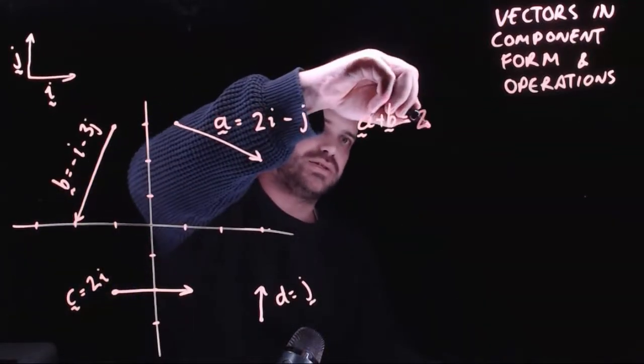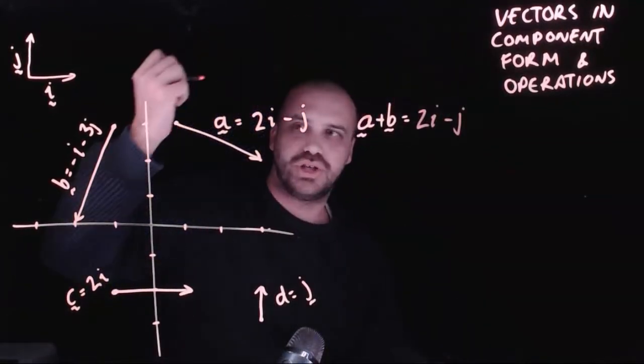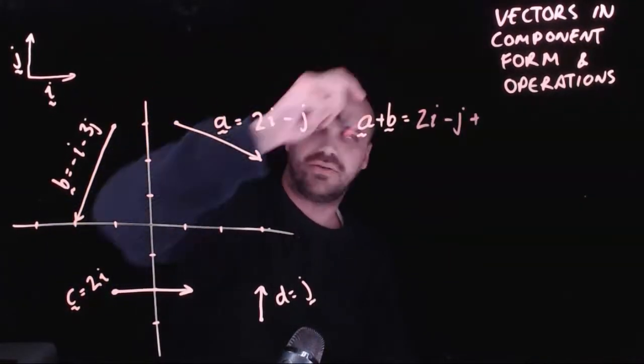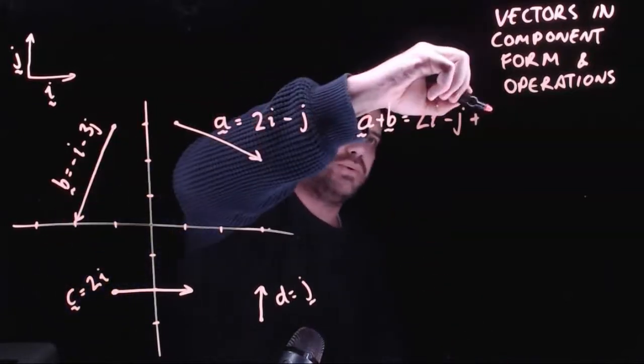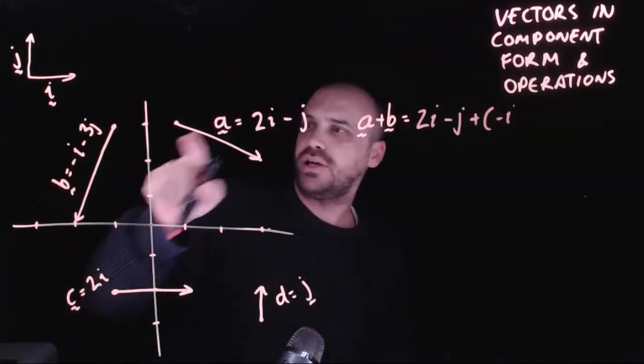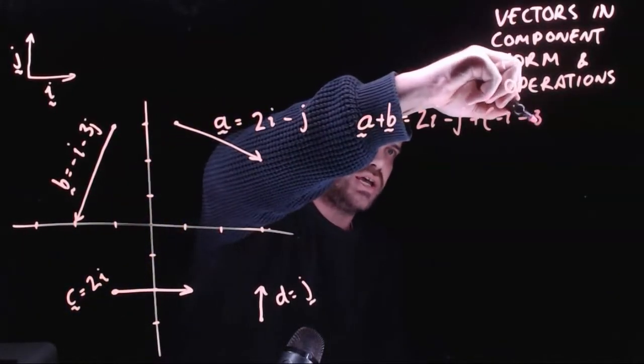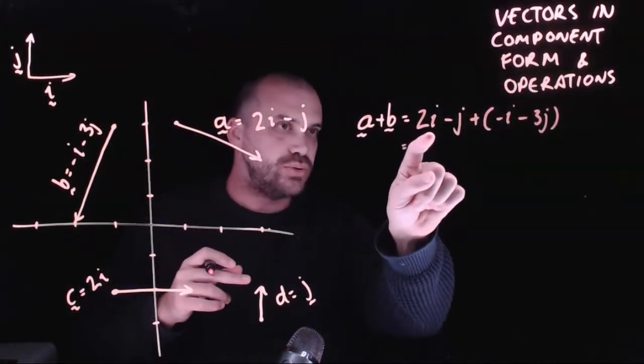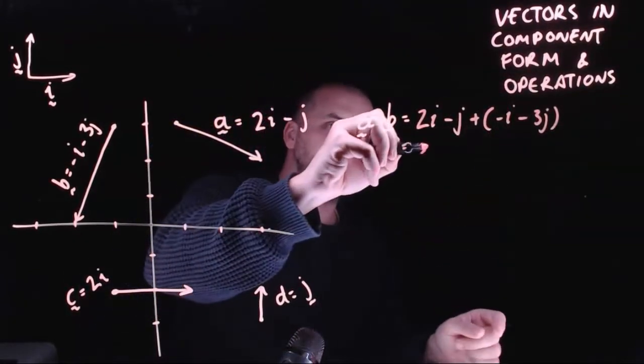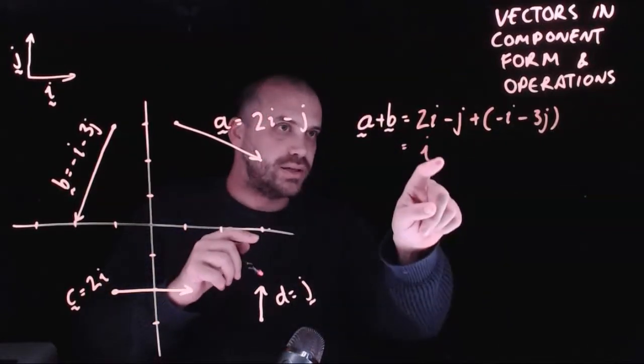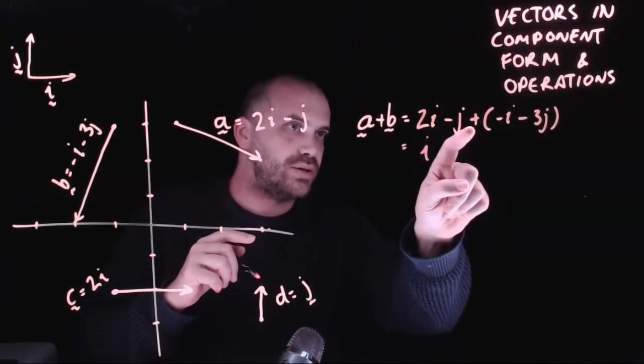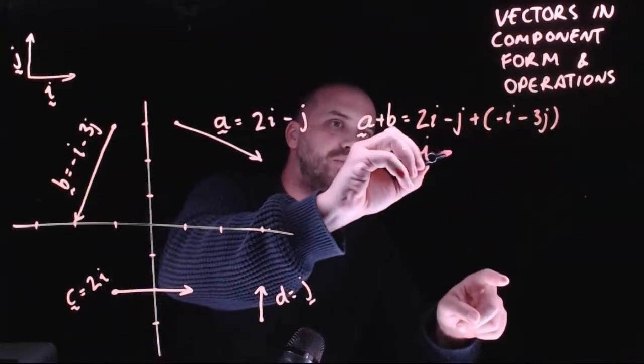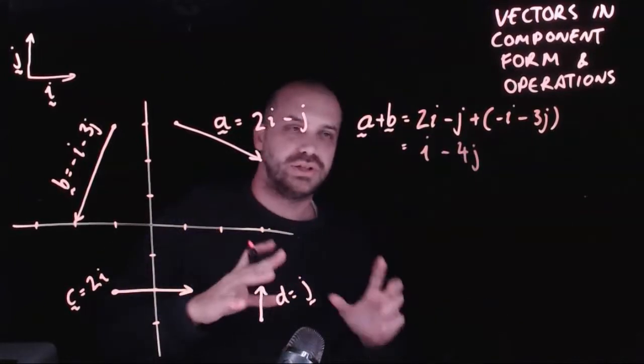Now vector a is two i minus j. And we want to add vector b. We want to add negative i minus three j. Now that's going to be equal to two i plus negative i, which is i. And it's going to be equal to negative j plus negative three j, which is negative four j.